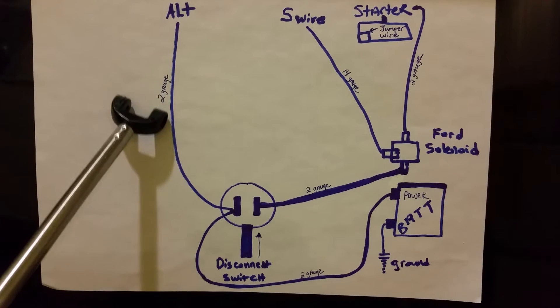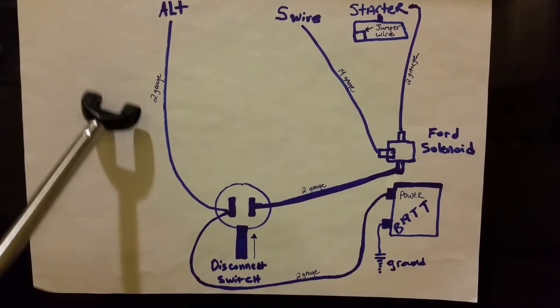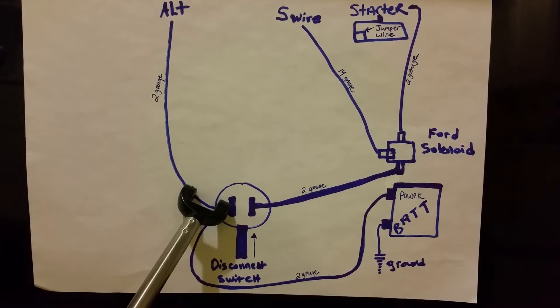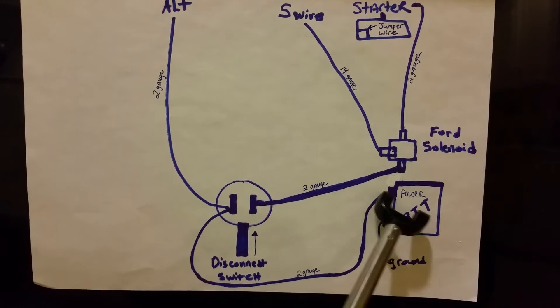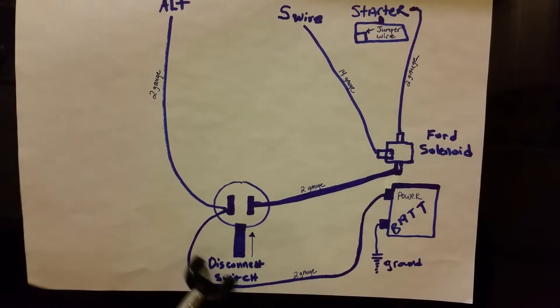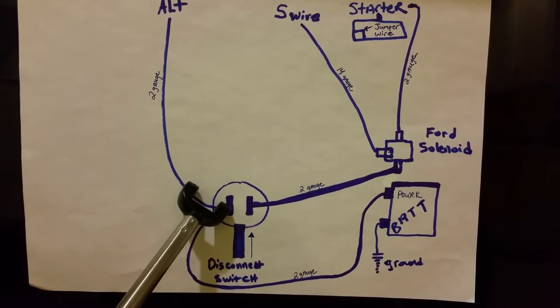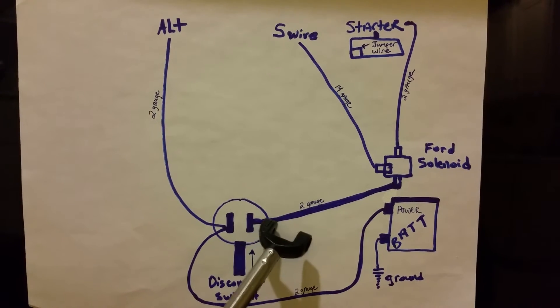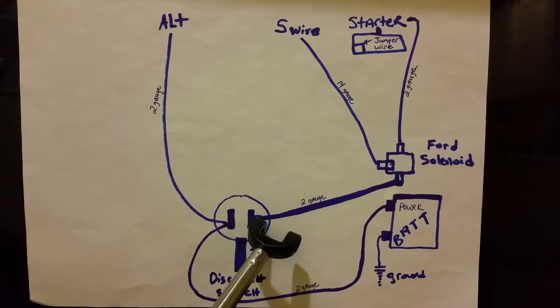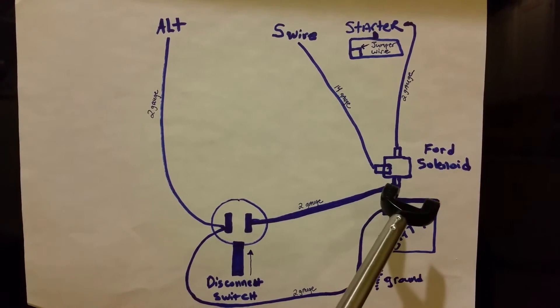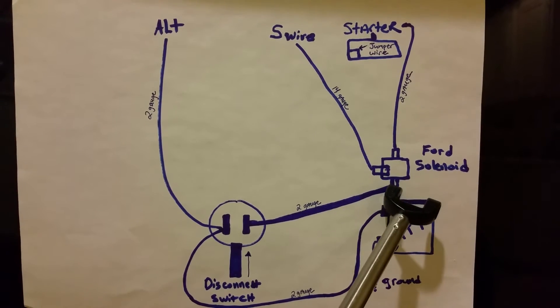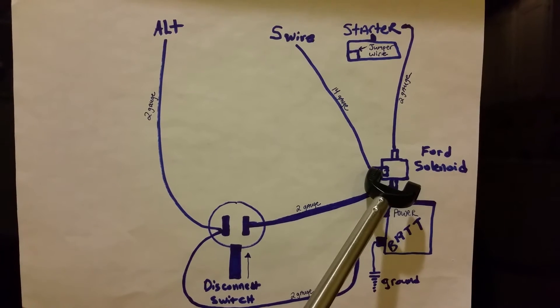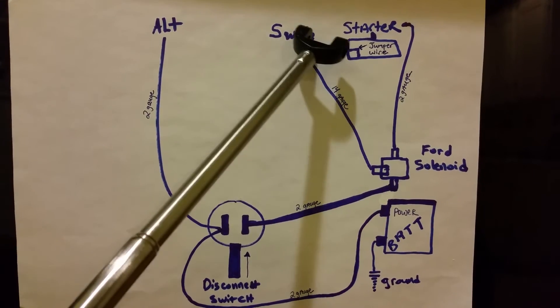Alternator, two gauge wire, or you can use one gauge, goes down to your disconnect switch. One side of your disconnect switch, your battery goes to the same side of the disconnect switch. Then you're going to want to take another two gauge wire to the Ford solenoid switch on one side. This wire here, this is the front of your car.